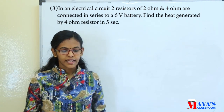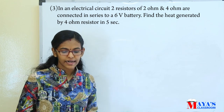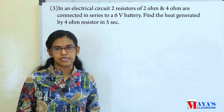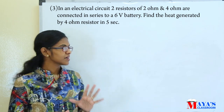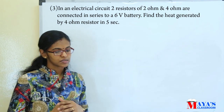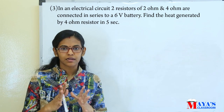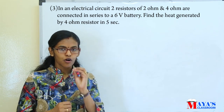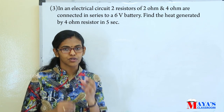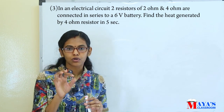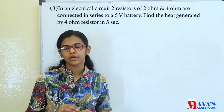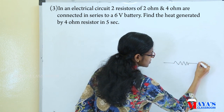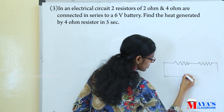Next question: in an electrical circuit, two resistors of 2 ohm and 4 ohm are connected in series to a 6 volt battery. Find the heat generated by the 4 ohm resistor in 5 seconds. There are two resistors in series: a 2 ohm resistor and a 4 ohm resistor connected with a 6 volt battery.